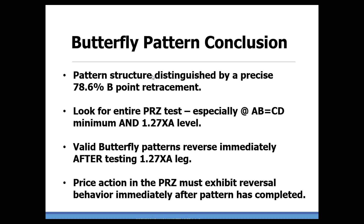Butterfly pattern conclusion. This is a W or M structure defined by a precise .786 B-point — that's the key. That's the differentiation between all other similar type structures. That's how we know to look at the 1.27 XA level, and in combination with the minimum AB equals CD, gives us the best setups. Valid butterfly patterns must reverse after hitting that 1.27 XA leg — really important. We see a lot of butterfly patterns that actually will exceed that area, indicating an early failure. That action at the 1.27 XA really defines the validity of the opportunity, so look for price action in the potential reversal zone to exhibit reversal behavior immediately thereafter. If not, then you've got a likely failure on your hands.